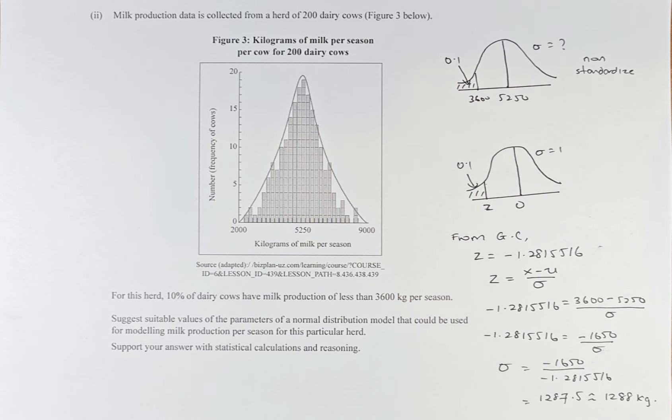The milk production data is collected from a herd of 200 dairy cows, figure 3. So we should go for the herd now. The first example was on New Zealand cows. Now we're talking about the herd of 200 dairy cows. From this herd, 10% of the dairy cows have milk production less than 3,600.